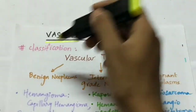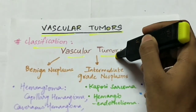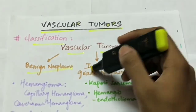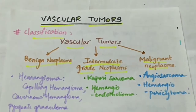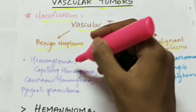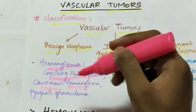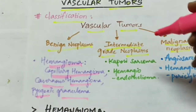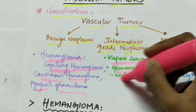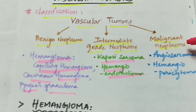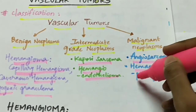Now the vascular tumors. The classification of vascular tumors can be divided into three categories: first is benign neoplasms, second is intermediate grade neoplasms, and third is malignant neoplasms. The benign neoplasms include hemangioma, which consists of capillary hemangioma, cavernous hemangioma, and pyogenic granuloma. The intermediate grade neoplasms include Kaposi sarcoma and hemangioendothelioma. The malignant neoplasms include angiosarcoma and hemangiopericytoma.